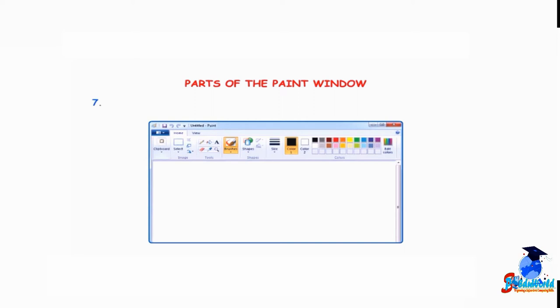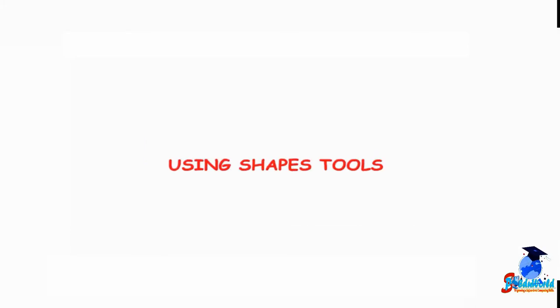Number 7: Drawing Area. The drawing area covers the major part of the Paint window. This area is used for making colorful drawings. How to use shapes tools.